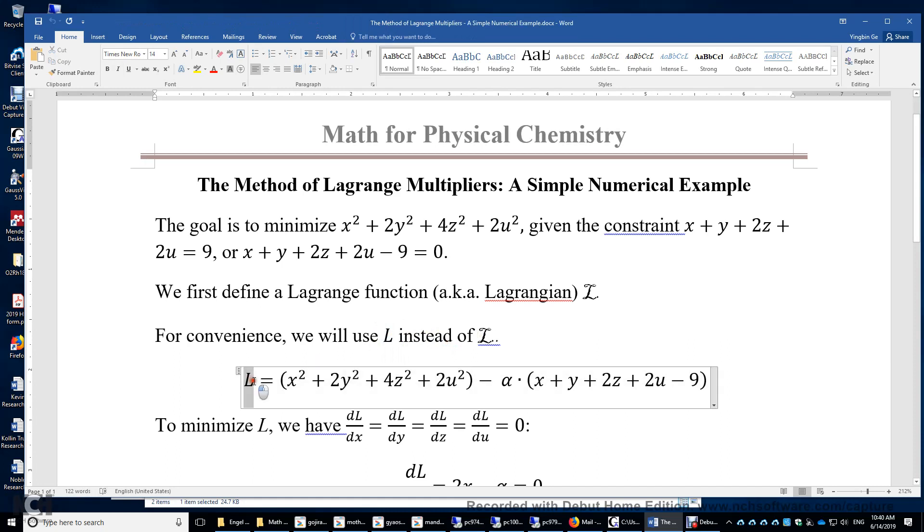So first, how do we define this L? L is simply the function you want to minimize or maximize. It doesn't matter. So this is a function. In this case, we want to minimize this function. And then minus alpha. Okay, alpha is a Lagrange multiplier. Times, okay, over here, that's the constraint.